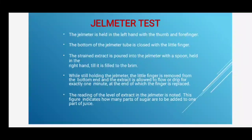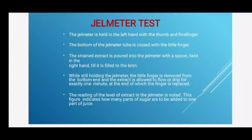The second test is the gel meter test. The gel meter is held in the left hand with thumb and forefinger; the bottom of the gel meter tube is closed with the little finger. Strained extract is poured into the gel meter with a spoon held in the right hand until filled to the brim. The little finger is then removed and the extract is allowed to flow or drip for exactly one minute, after which the finger is replaced. The reading of the label of extract remaining in the gel meter is noted — this figure indicates how many parts of sugar are to be added to one part of juice.